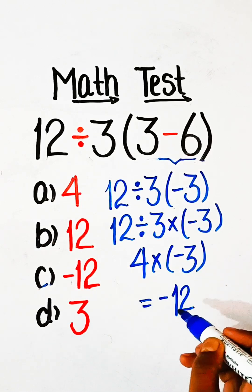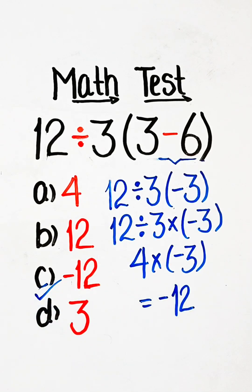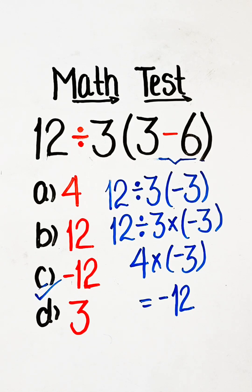4 multiplied by minus 3 is minus 12. So option C, minus 12, will be our correct answer. If you like my videos, please like, share, and subscribe, and comment the correct answer of this question below. Thanks for watching.